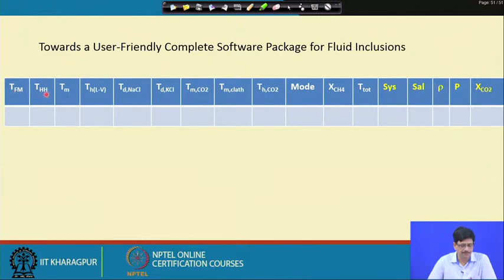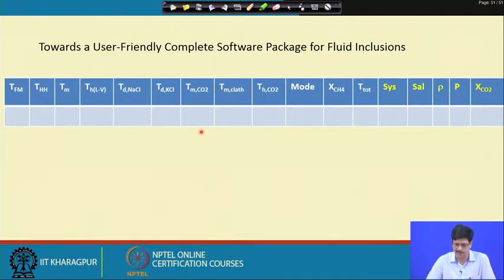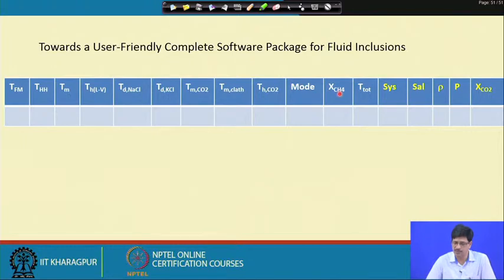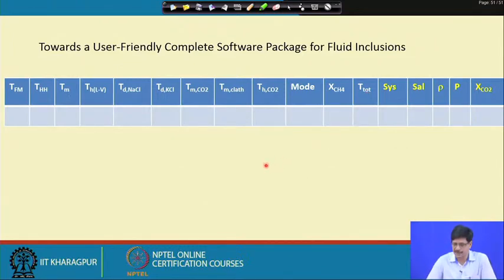These parameters represent all the data acquired in routine micro-thermometric experiments. TFM, THH, TM ice, THLV, TD NaCl, and TD KCl are for aqueous inclusions. TM CO₂ and TH CO₂ are for pure carbonic inclusions — with or without methane. TM CO₂, TM clathrate, TH CO₂, and temperature of total homogenization essentially indicate that you are dealing with an aqueous-carbonic system.